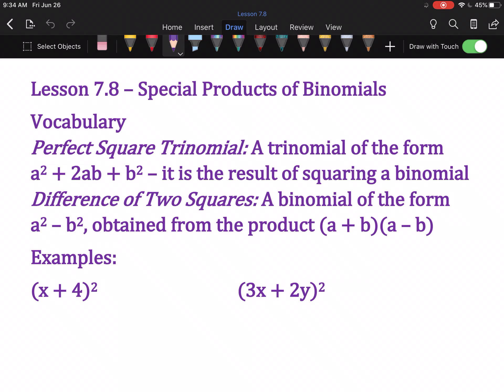And the difference of two squares is a binomial that looks like a² - b². And we get that from doing (a+b)(a-b). Basically, this is going to be more foiling. It's just these are special things that will always come out in the same pattern.